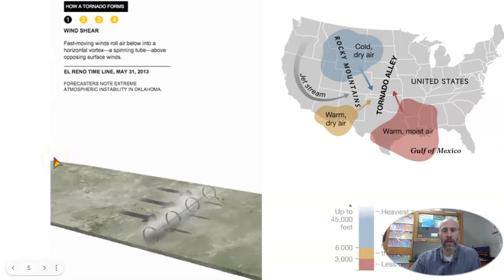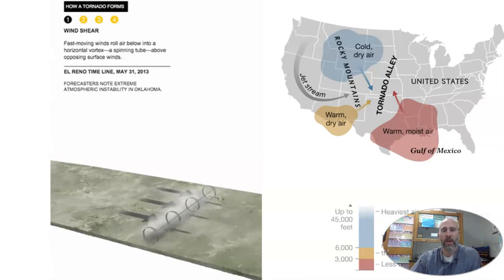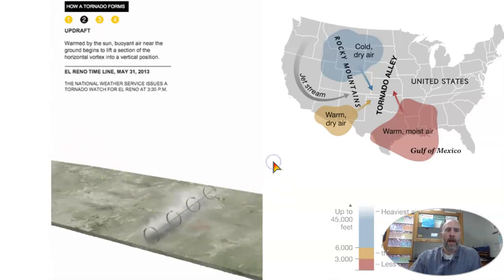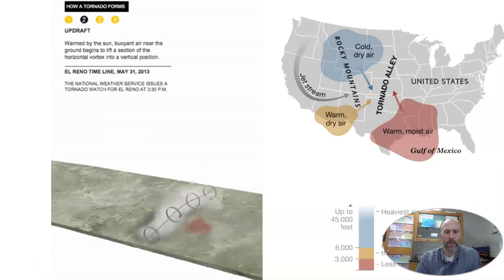The first ingredient we need is wind shear. Wind shear is when you've got winds coming in at different elevations from different directions — you can see the animation at the bottom. It causes a belt of rolling air. Then you have to have something that pulls it upright, and this is where the warm, hot air at the surface comes into play.